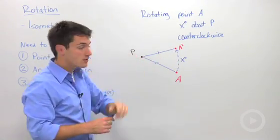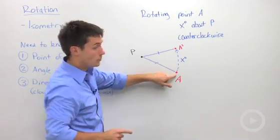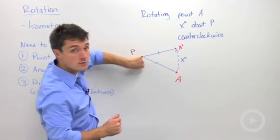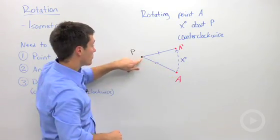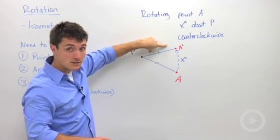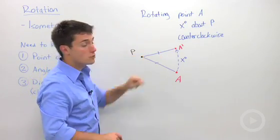So again, the first thing you need to know is if you have an image or a point, where are you going to rotate it about? Because this distance between your point and where you're rotating needs to be constant or congruent to your new image.